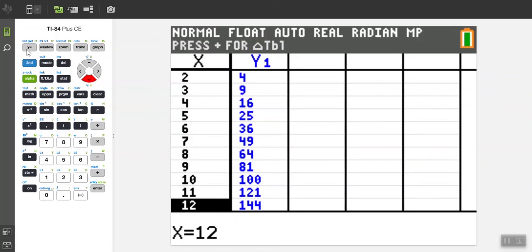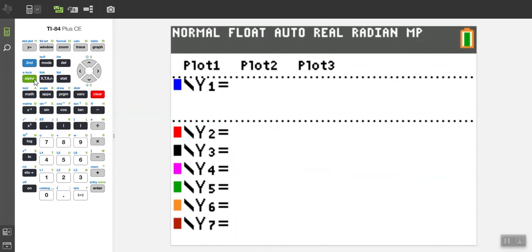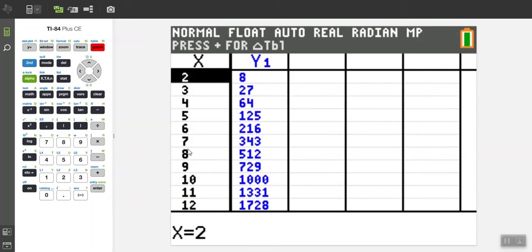To get the list of perfect cubes, go back to Y equals and type x cubed. To type the cubed, click the caret which is the little arrow and then 3. Then go back to the table which is second graph. This gives you your list of perfect cubes.